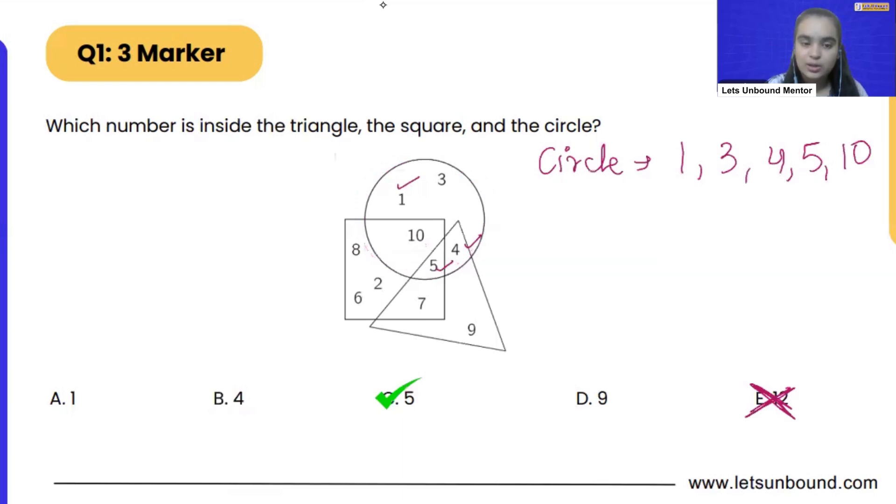Now we can also list down the numbers which are there in triangle. So can you tell me, pause the video and tell me what all numbers are there in triangle. So in triangle we have 4, 5, 7 and number 9.